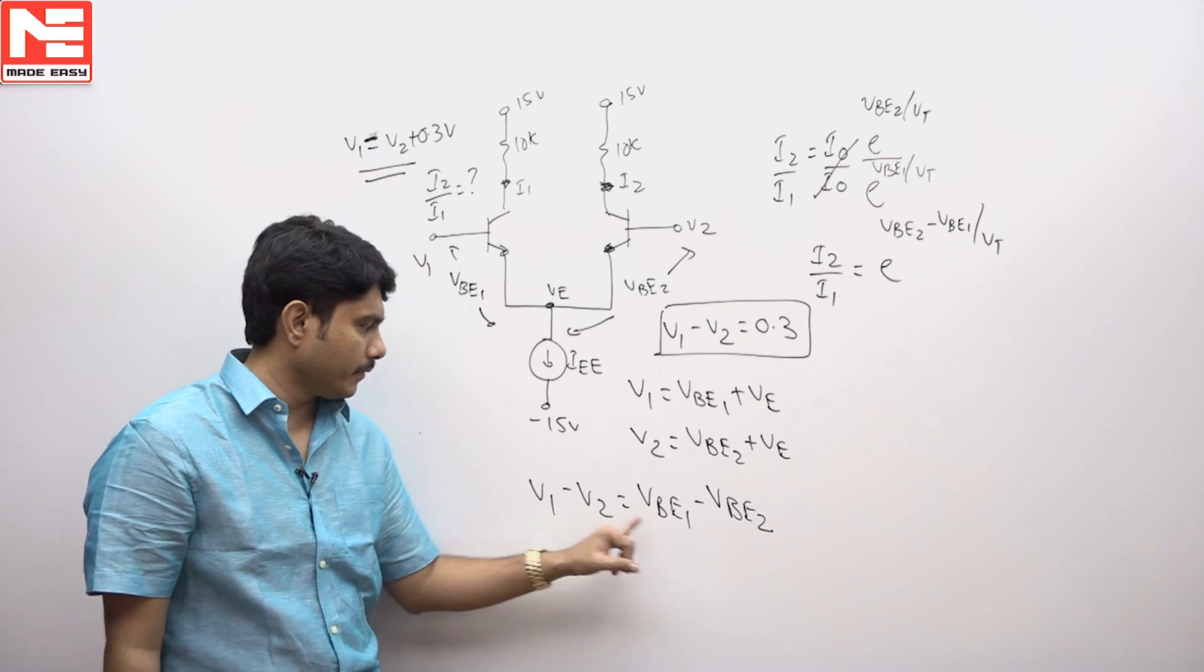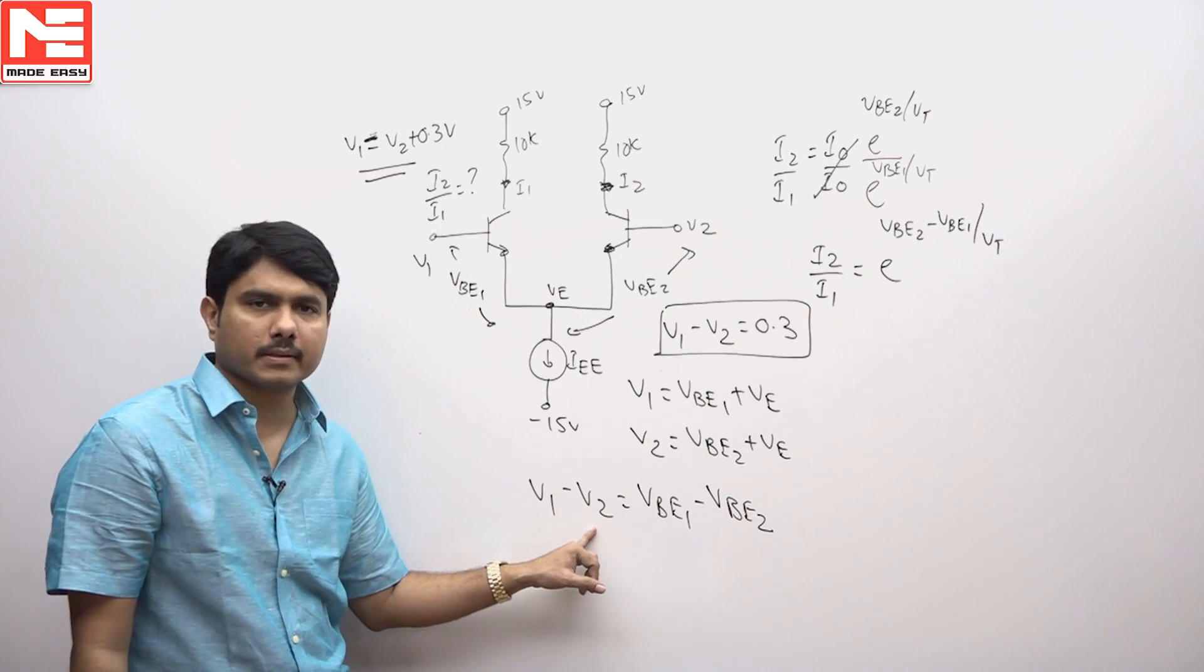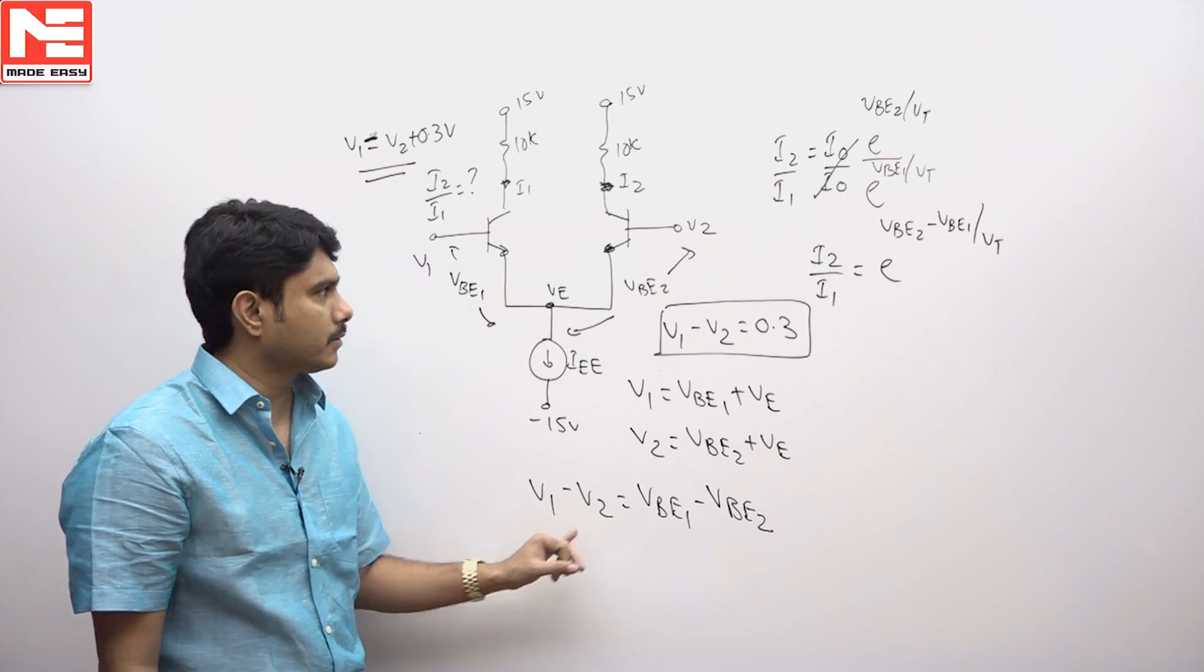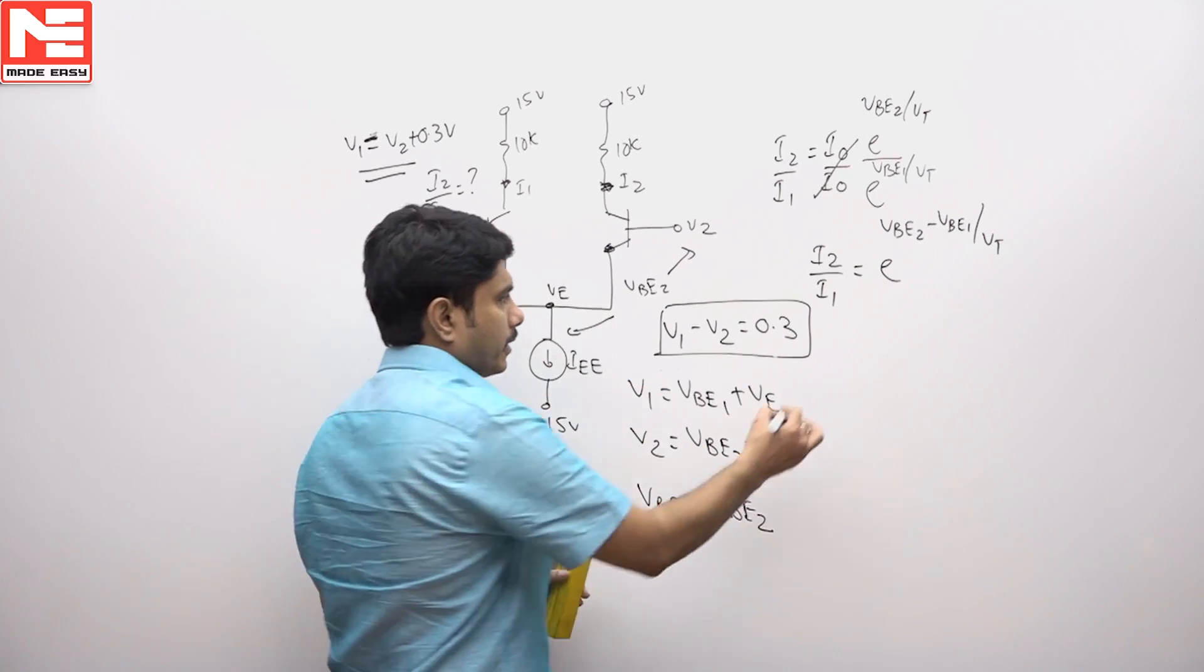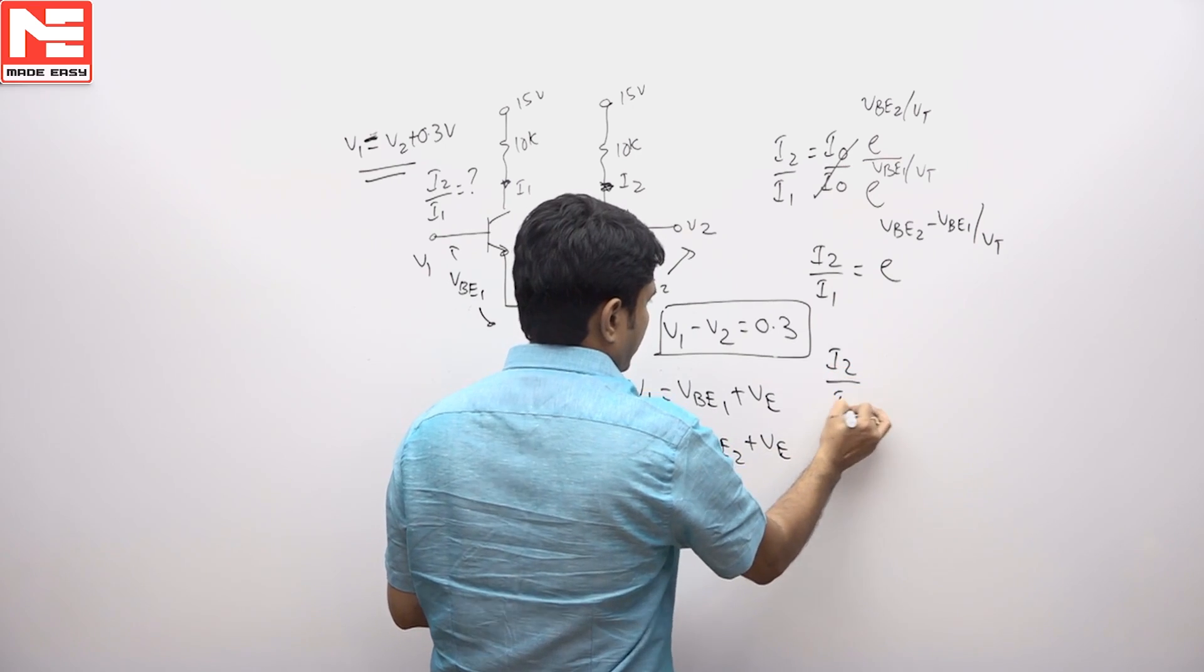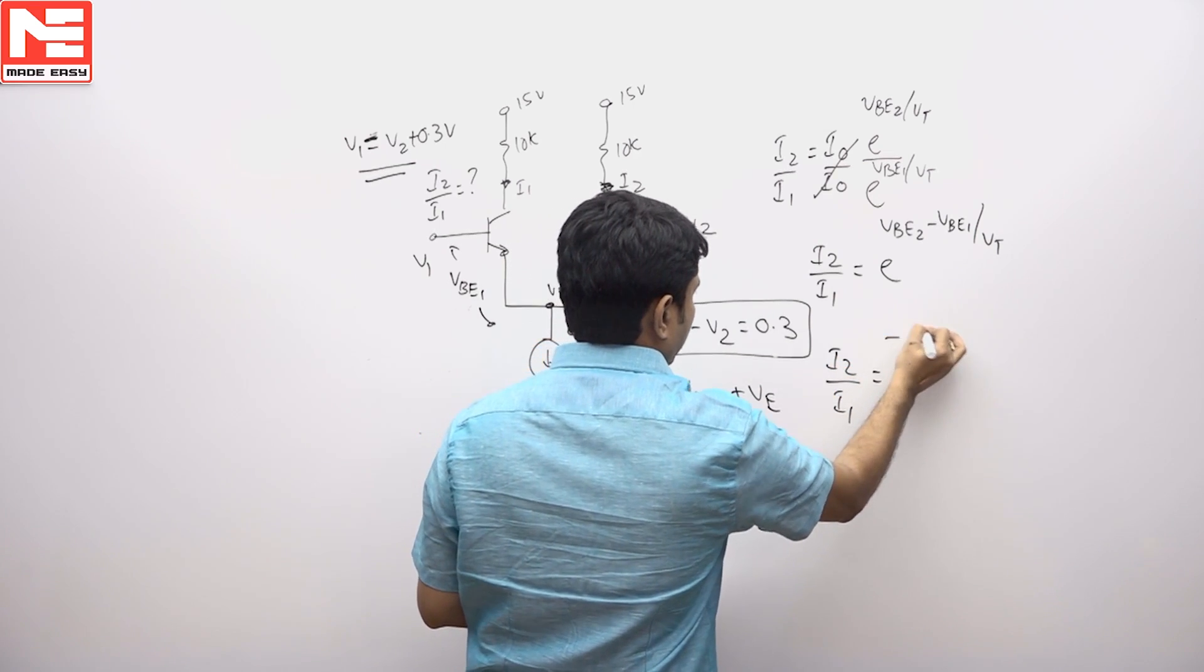So VBE2 minus VBE1 is equal to this reverse answer, negative value. That means the answer is given in the problem is 0.3. So in place of writing 0.3, we will take it as I2 by I1 is equal to E power minus 0.3.